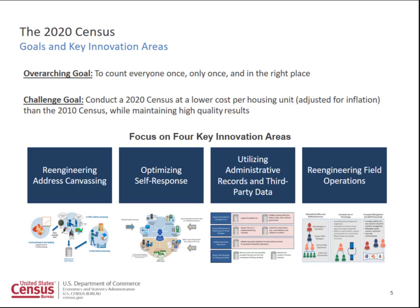The first area is re-engineering address canvassing. What I'm talking about here is how we ensure we have a complete frame of the nation. It's really important to remember that when we're talking about the census, we're not just talking about the total population — what's important is understanding where that population resides. Our goal is to count everyone once, only once, and in the right place. The key use of the census is for apportionment and redistricting, so a complete and accurate address frame is essential. The way we've done address canvassing is we've sent out about 150,000 listers to walk every block in the nation.